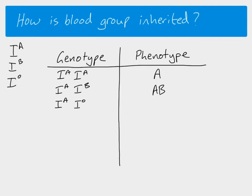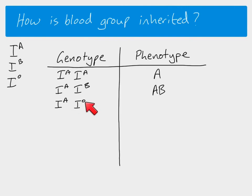We could also have I^A I^O. The O here is a small letter and we have a capital A. The capital A tells us it's dominant and the small O tells us it's recessive. So in this example of multiple alleles, not only do we have three different alleles, but alleles A and B are co-dominant to each other, while allele O is recessive. That means the phenotype here would be blood group A.